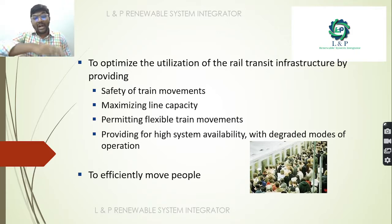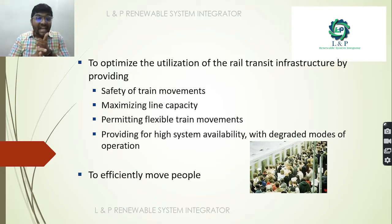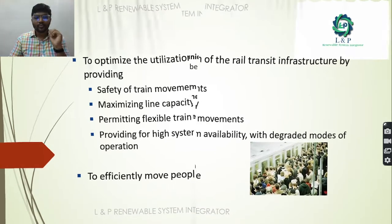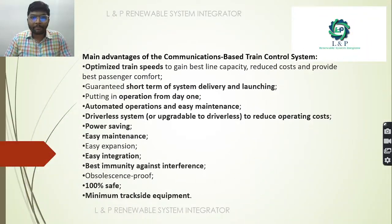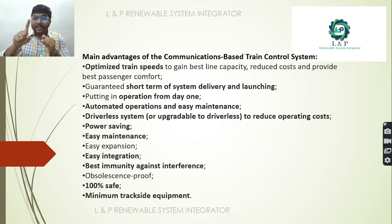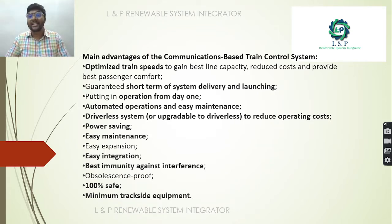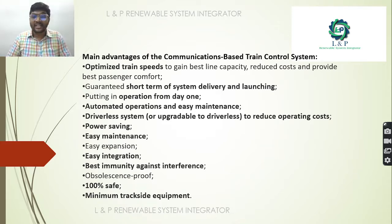Because of this method the transit infrastructure has been improved and we have good safety for train movements. We can maximize line capacity and permit flexible train movements. The main advantages include optimized train speed control, quick deployment from day one, automated operation, easy maintenance, power saving, easy integration, best immunity against interference, 100% safety, and minimum trackside equipment.